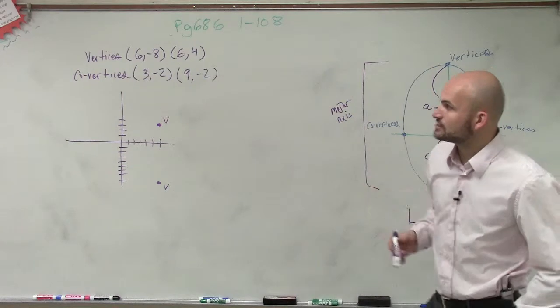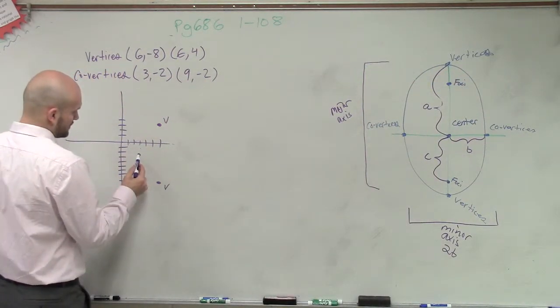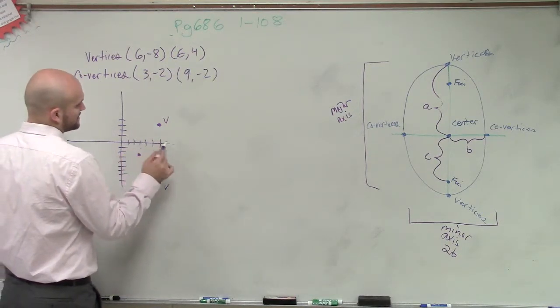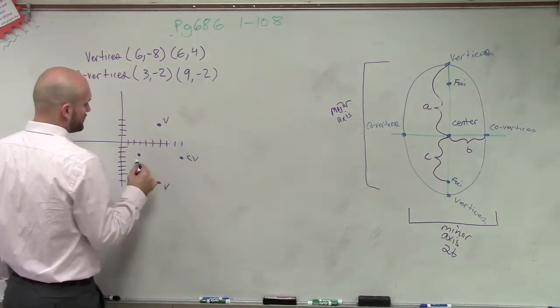Then I have co-vertices at (3, -2). 1, 2, 3, negative 2. And then also at (9, -2). 1, 2, 3, 4, 5, 6, 7, 8, 9, negative 2. So those are my co-vertices.